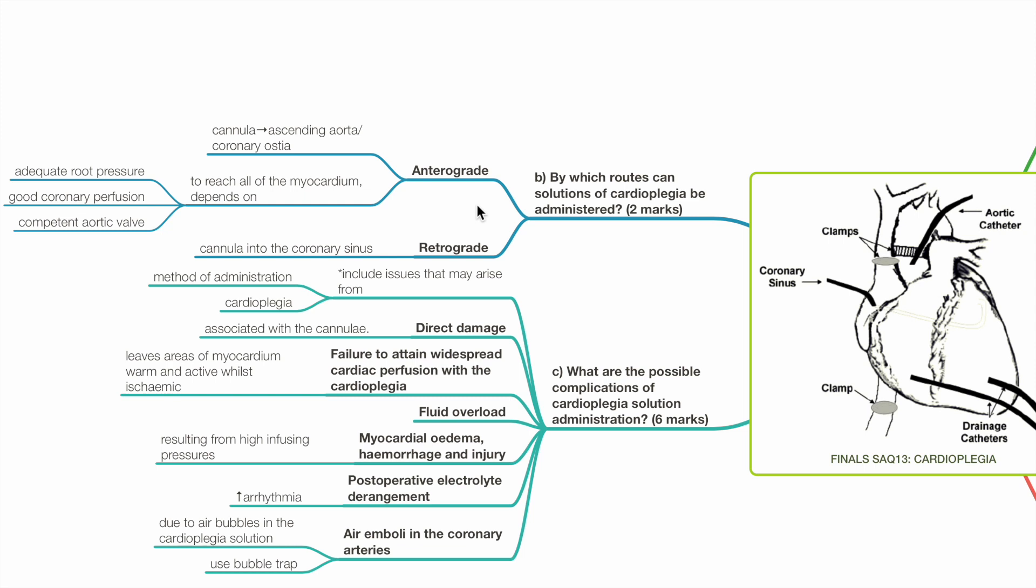In anterograde administration, a cannula is sited at the ascending aorta or coronary ostia. For the solution to reach all of the myocardium, this depends on adequate root pressure, good coronary perfusion, and competent aortic valve.